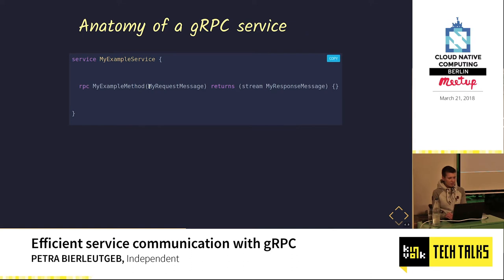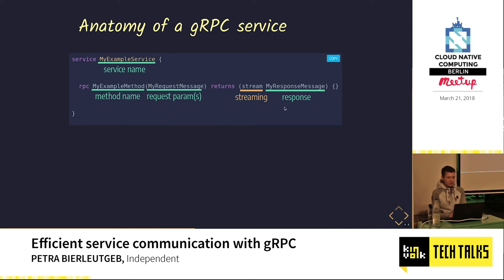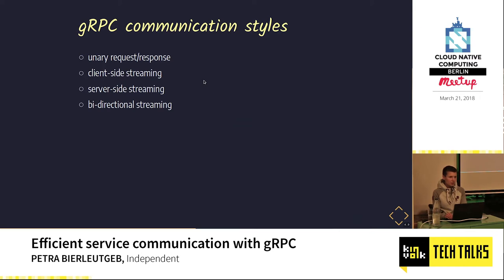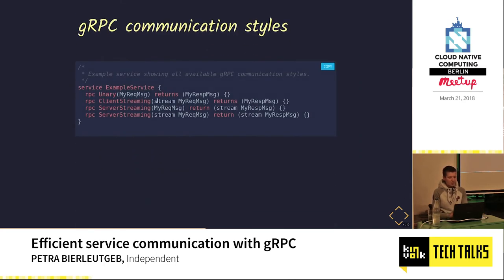Here's how you actually define a gRPC service. You always have a service name, and 'rpc' tells us this is an RPC method in a service. The most interesting part is the 'stream' keyword, which can appear before the response or before the request. gRPC has four different kinds of communication styles: request-response where client and service only send one message; client-side streaming; server-side streaming; or both sides streaming. You only have to put the keyword 'stream' in front of the corresponding message type.